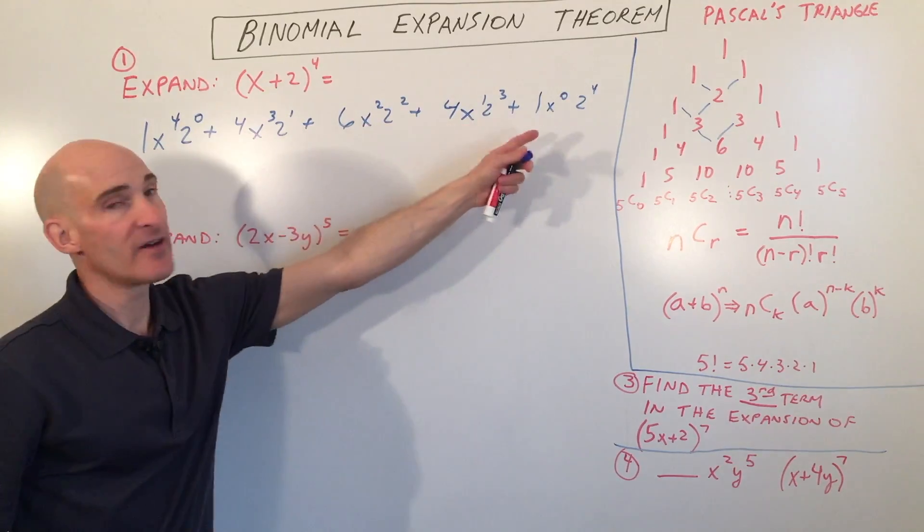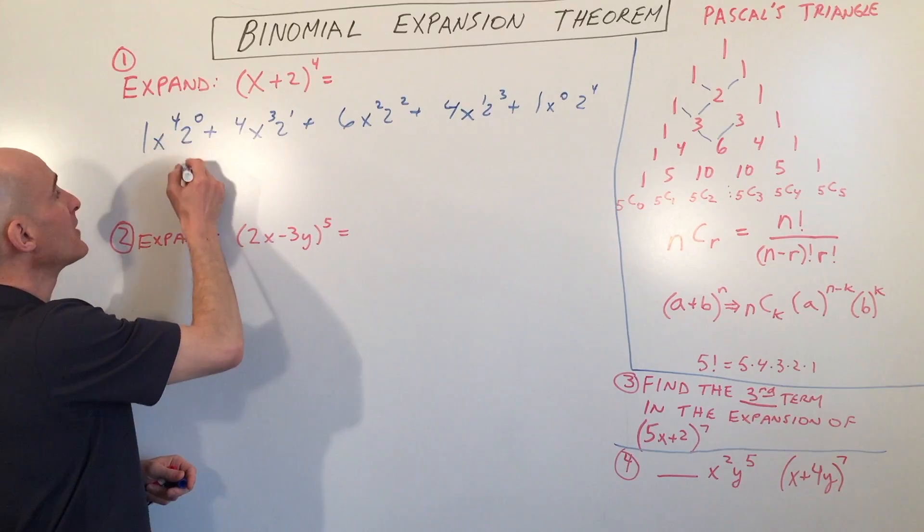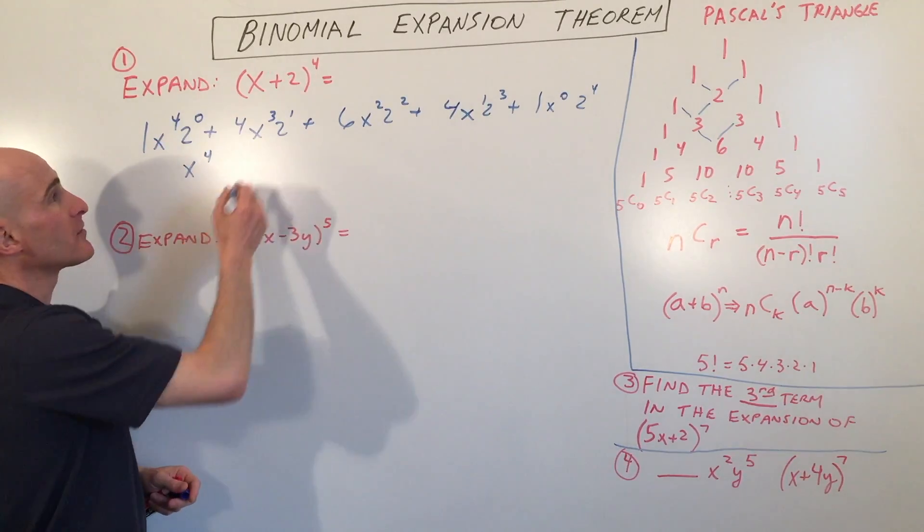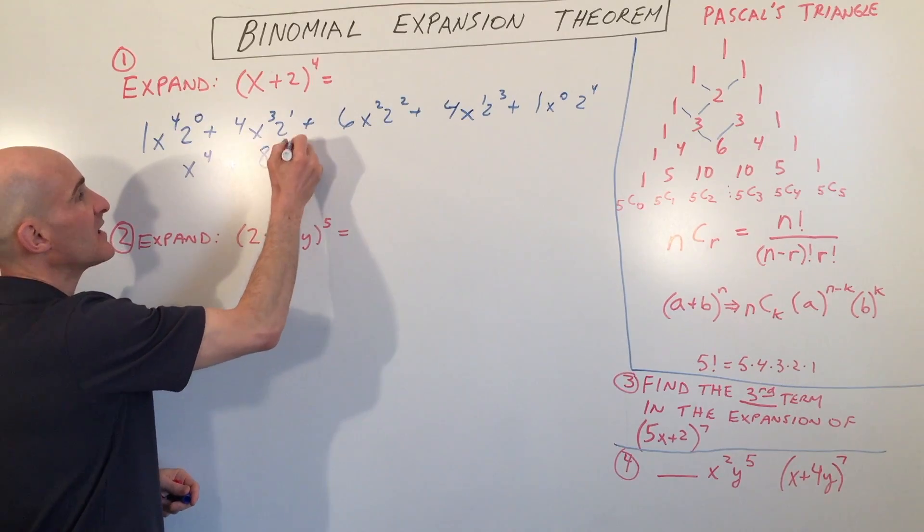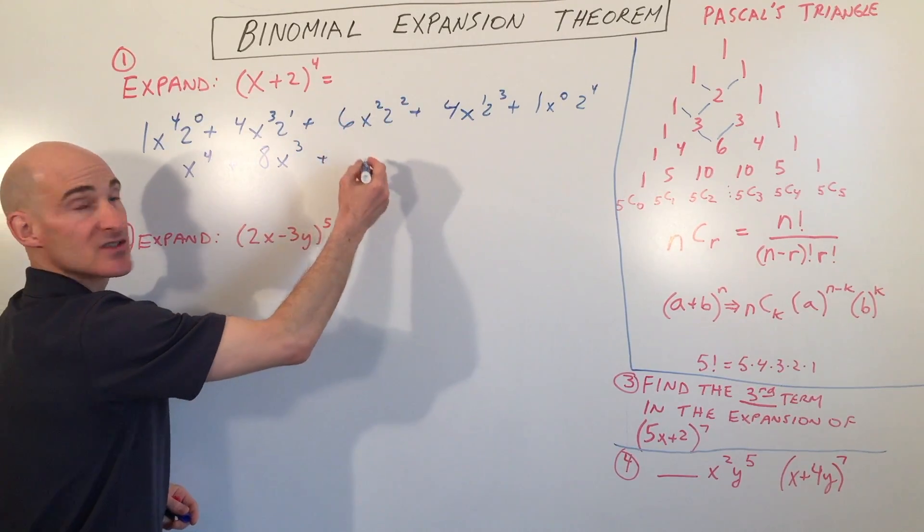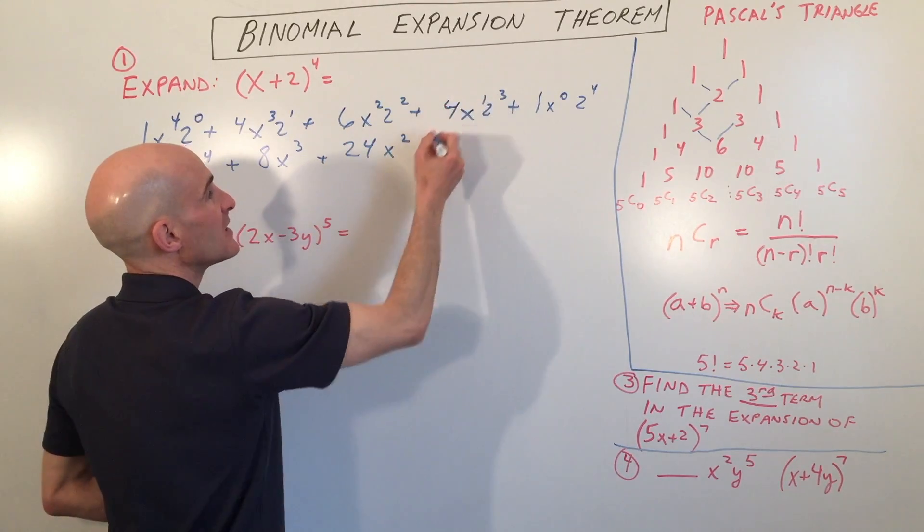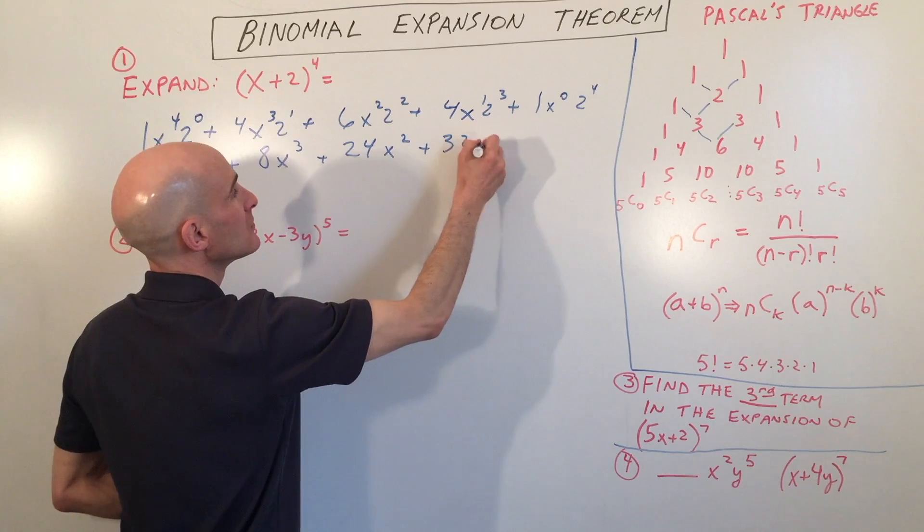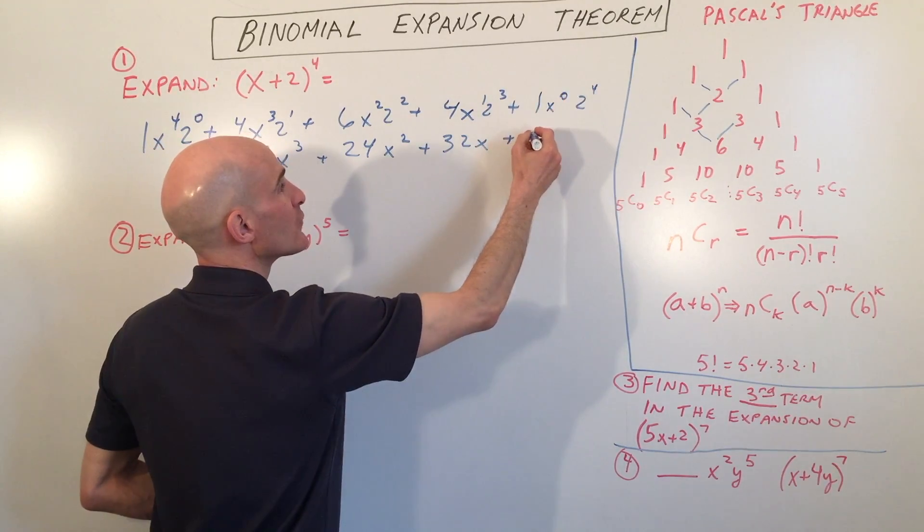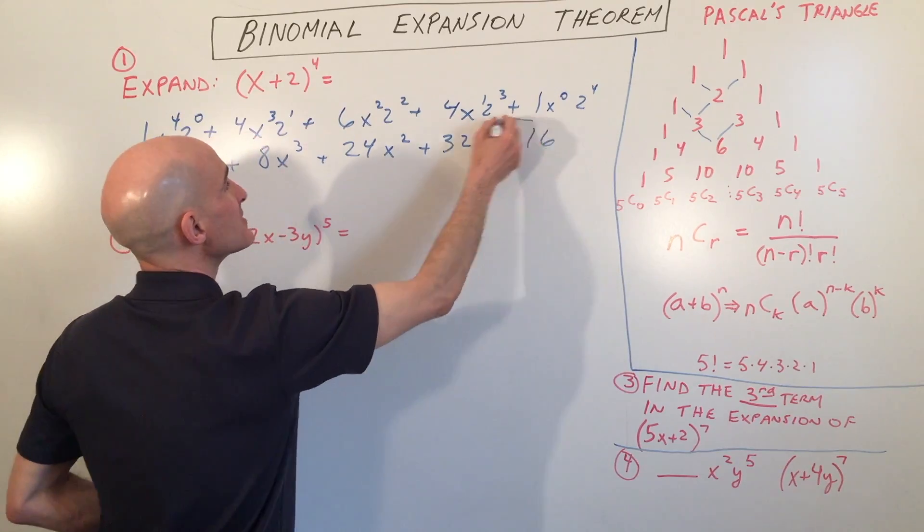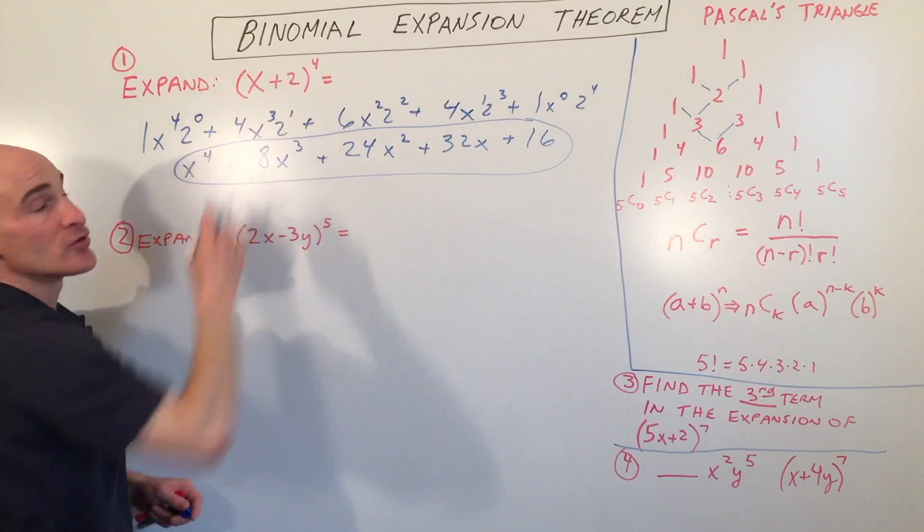So let's just go back and simplify this. You can see anything to the zero power is 1 times 1 gives us x to the fourth. 2 to the first times 4 is 8, so that gives us 8x cubed. 2 squared is 4 times 6 is 24. 2 cubed is 8 times 4 is 32. And x to the zero is 1 times 1 is 1 times 2 to the fourth is 16. And this is our expansion of x plus 2 to the fourth.